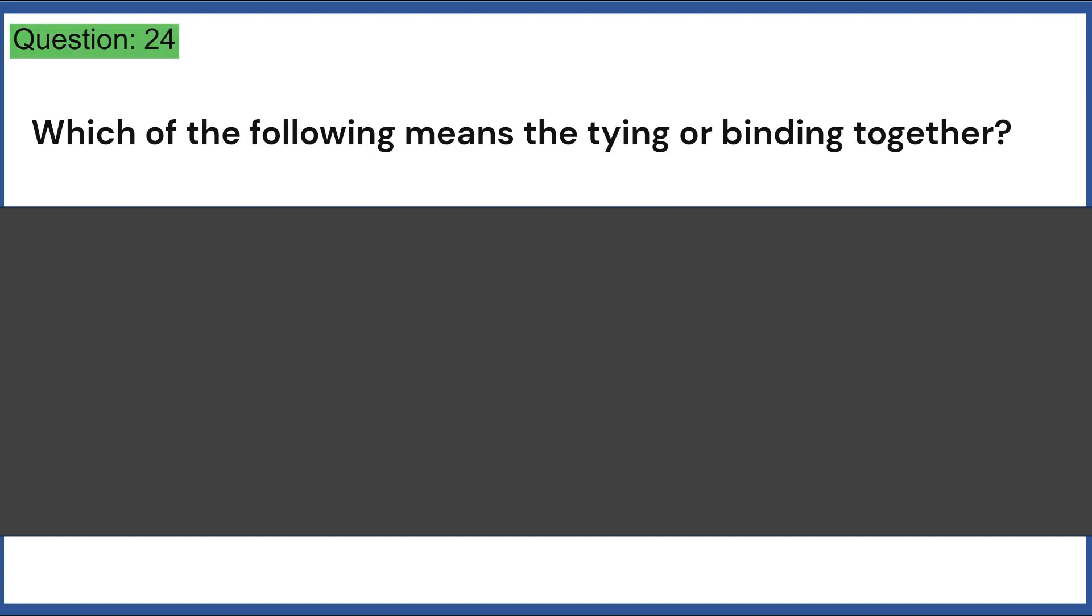Which of the following means the tying or binding together? a. Arthrodesis b. Subluxation c. Dislocation d. Resection e. None of the above. Answer, A.